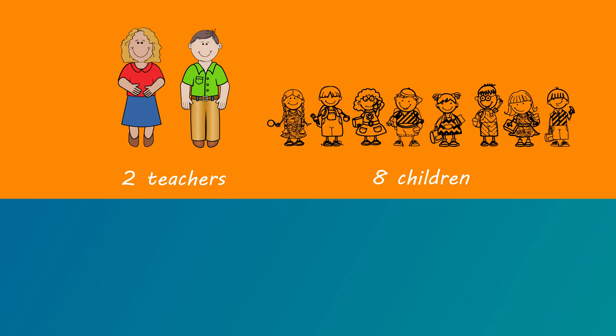In our first example, two teachers supervise eight children on a school trip. Ratios are written with this symbol between the two quantities. This symbol means is to. That's two teachers is to eight children.